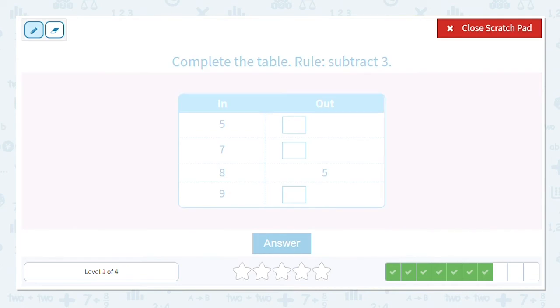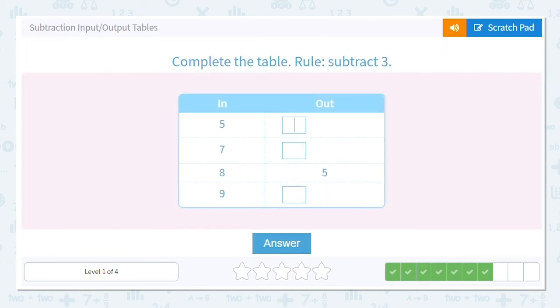Next one. Subtracting 3 again. So we're going to put minus 3 every time. And we are going to check, 8 minus 3. Is 8 minus 3, 5? Yes. So we can continue on and answer the rest. So 5 minus 3 equals 2. What is 7 minus 3? 4. 9 minus 3 equals 6. Good job.